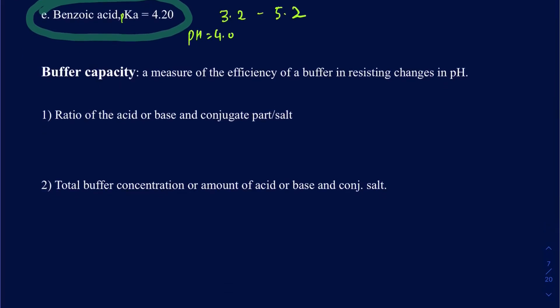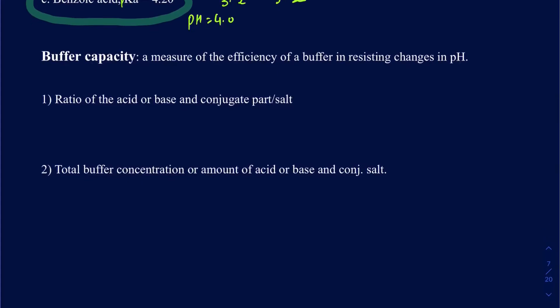Let's talk about what buffer capacity is. In qualitative terms, buffer capacity is how well a buffer can resist the change in pH. The best position for maximum buffer capacity is when the ratio of your acid and its conjugate base is almost 1 to 1. For example, with HF and NaF — HF is the weak acid and NaF is the conjugate base salt — if their concentrations are 1 to 1, that's when you get the best buffer capacity. As the ratio moves away from 1 to 1, the buffer starts losing its capacity.